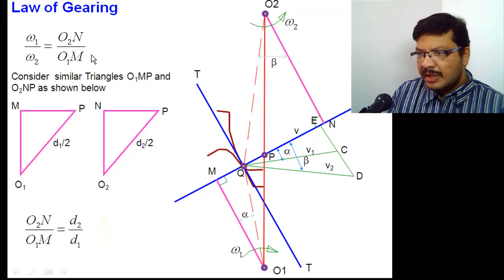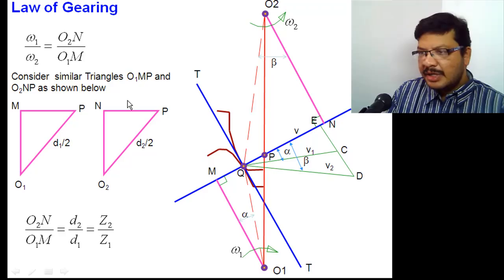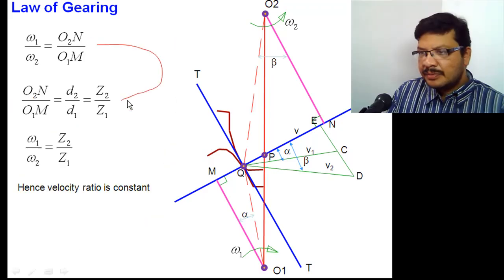If you substitute this value here in this equation, D2 by D1 you can write also as Z2 by Z1. Because D equal to M into Z. From that relation, D2 by D1 equal to Z2 by Z1. If you substitute this value in this equation, that will become omega 1 by omega 2 equal to Z2 by Z1. Here, number of teeth on the two gear wheels are constant. Hence, the velocity ratio is constant.